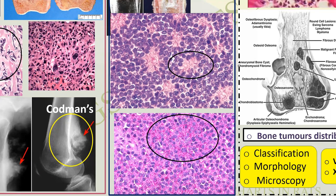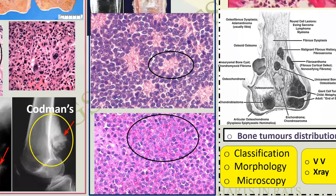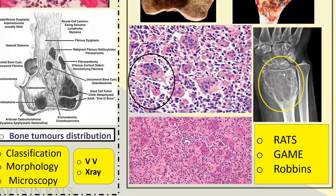Incidentally, there is a soap bubble appearance seen radiologically in the giant cell tumor.